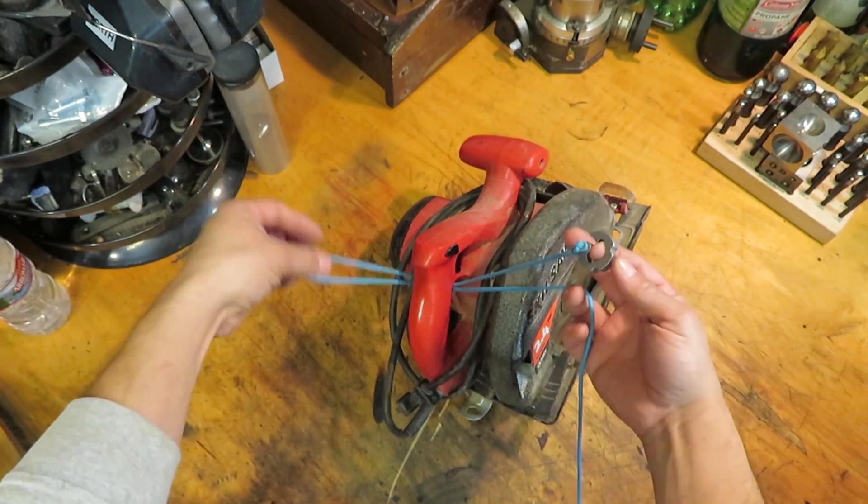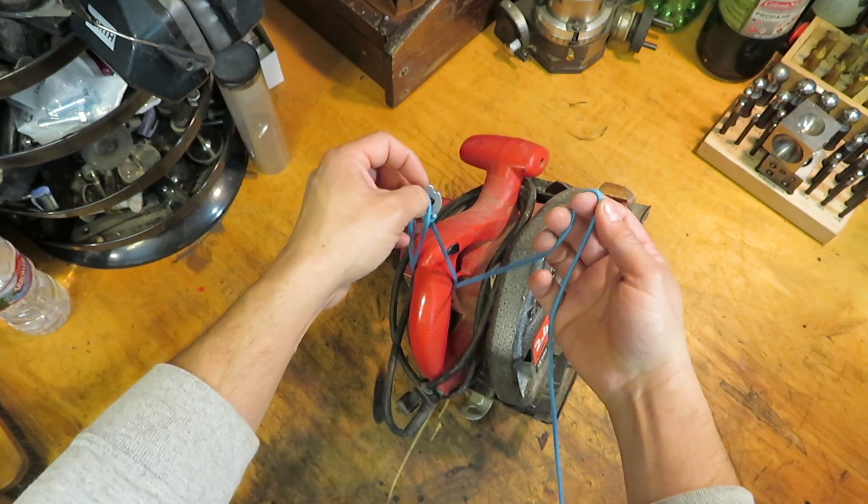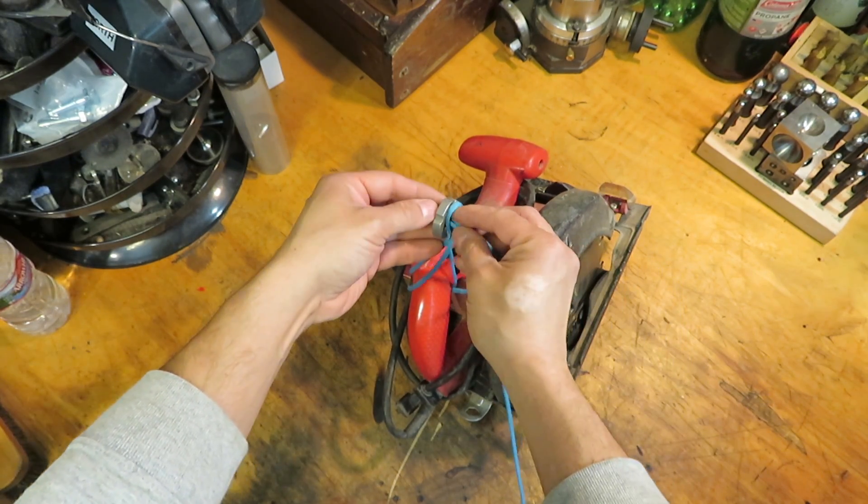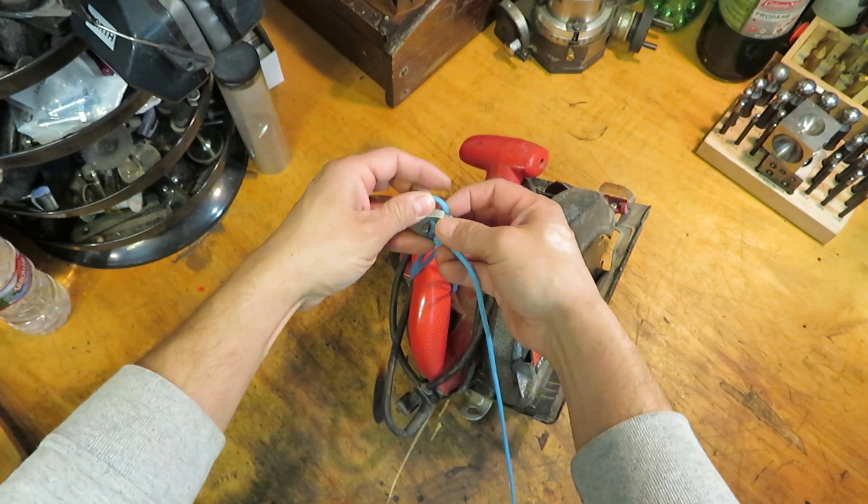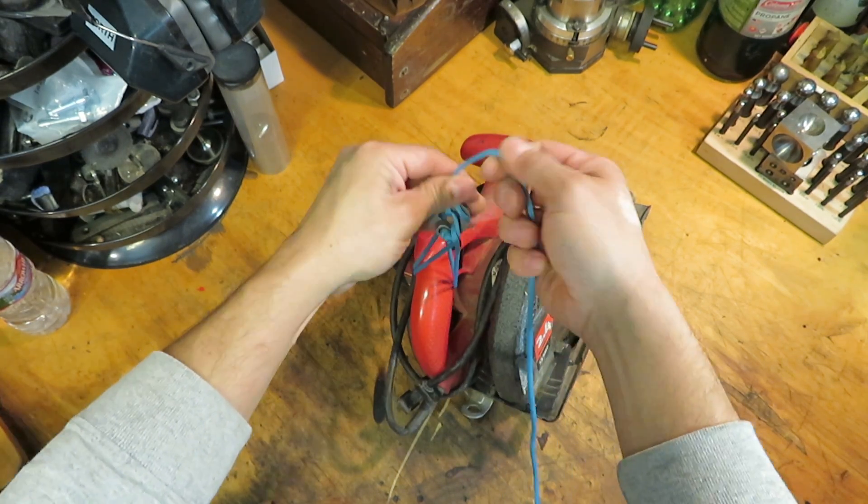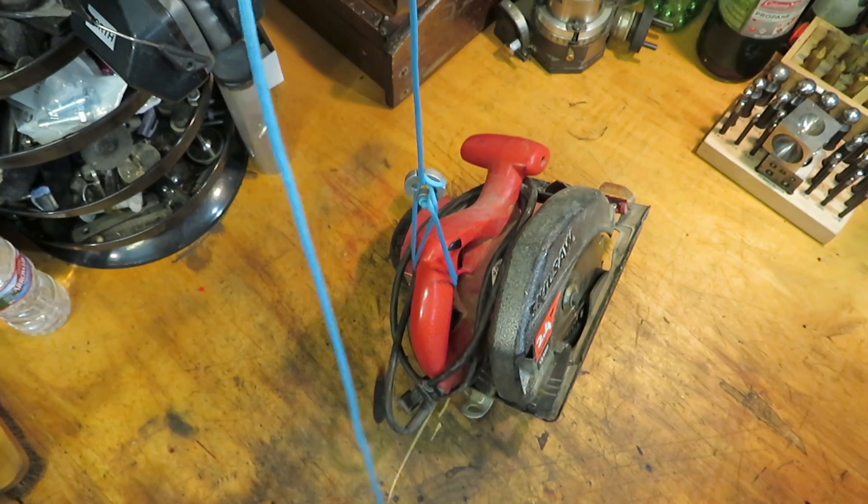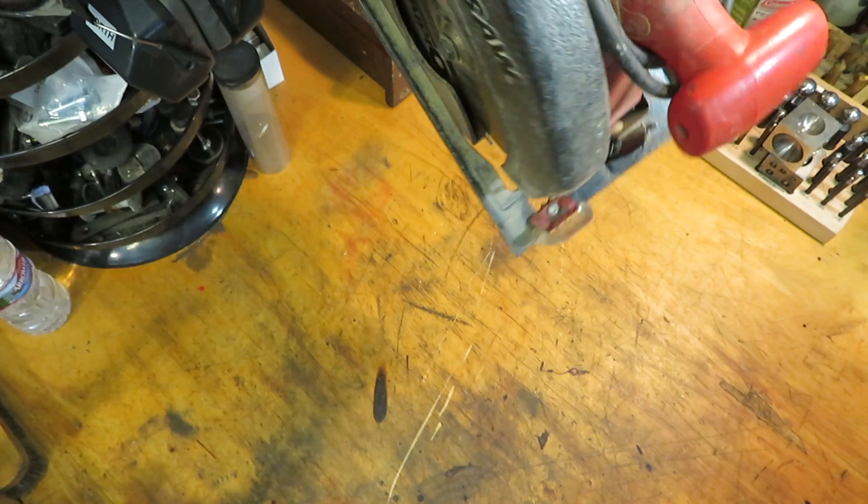Pull a bite through. And now I'm just going to make another bite in my standing end. Feed it through. Hook it onto the notches. There we go. Make sure everything is in place. Looks good.